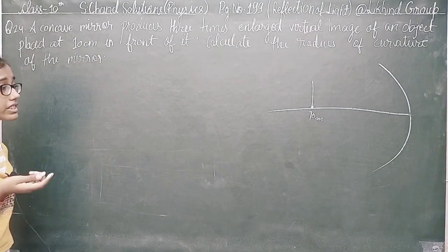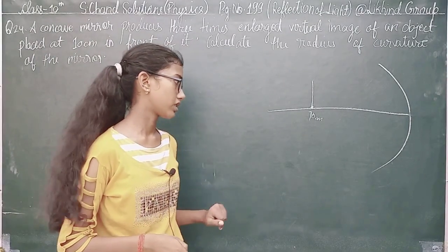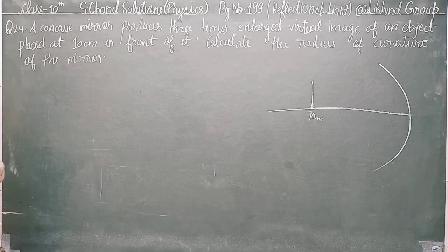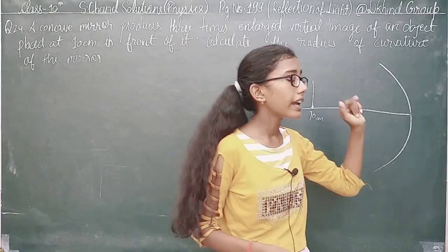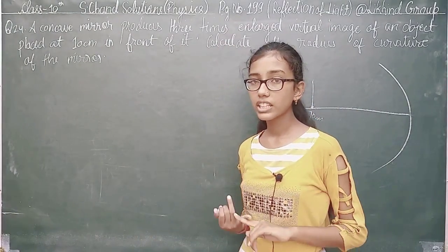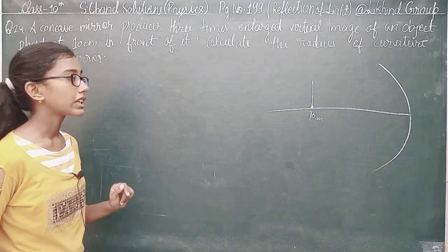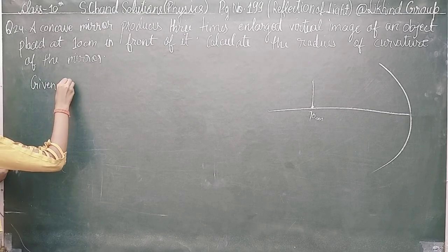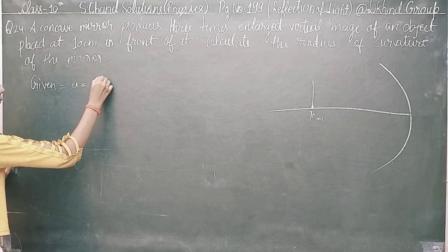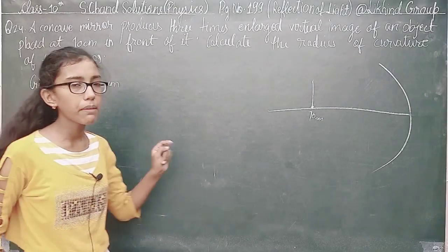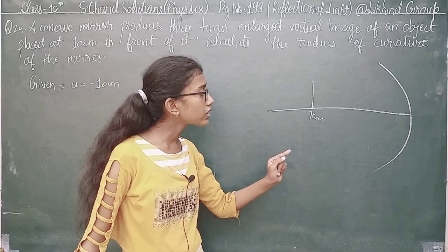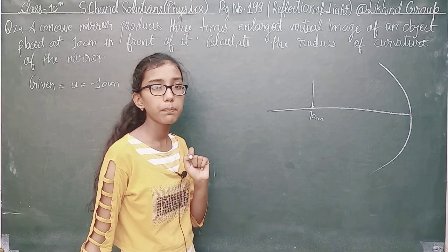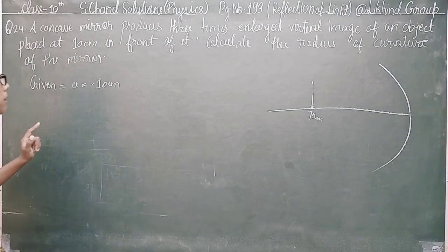We need to find the radius of curvature. We don't know the radius of curvature and focal length. We have two things given: the virtual image and magnification, and the object distance of 10 cm. It is also a concave mirror. The object distance U is minus 10 cm, because by sign convention for a concave mirror, the object distance is negative.